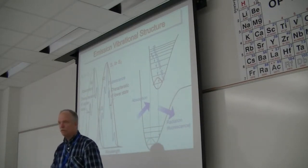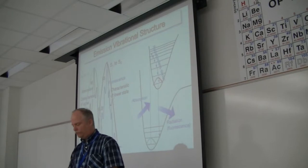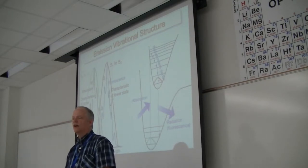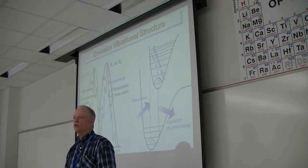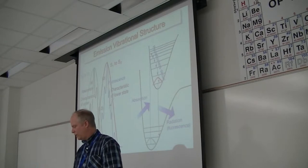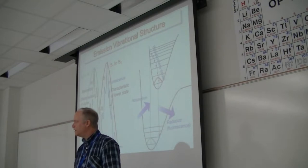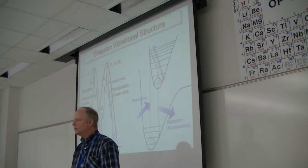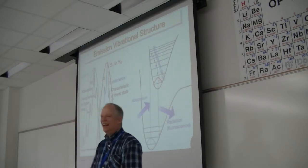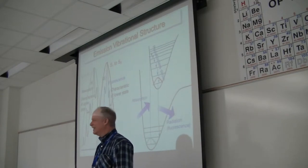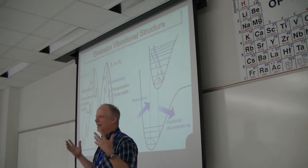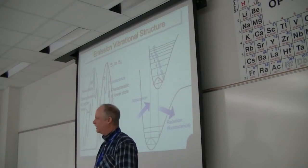Phosphorescence is really slow because the spin flip is a statistically forbidden transition. The molecule sits there until some quantum fluctuation allows that spin flip to happen and a photon is emitted. Nature says you can't do that — and nature says hold my beer. It's going to sit there until that quantum fluctuation allows the spin flip.